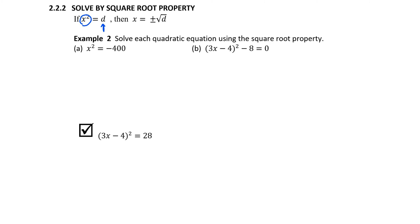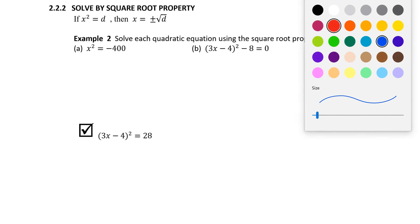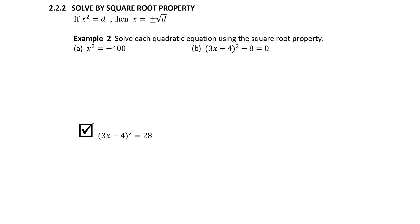Isolate the quadratic part—that is, isolate the x squared—and then take the square root of both sides. In example 2a, notice we have the quadratic or the x squared term and just a constant left on the other side. So to solve this equation, we're going to take the square root of both sides: the square root of the left side and the square root of the right side.